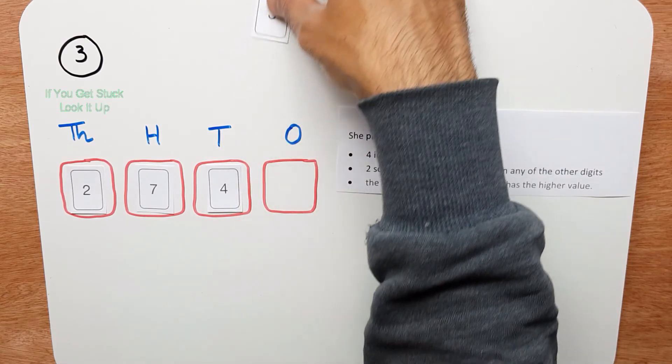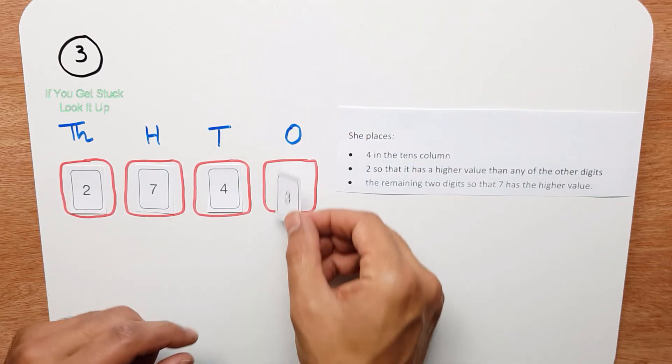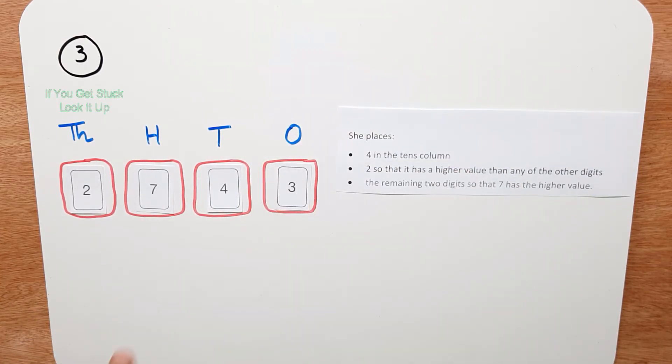Finally, 3 must go into the ones column. So the number according to Lila's instructions is 2,743.